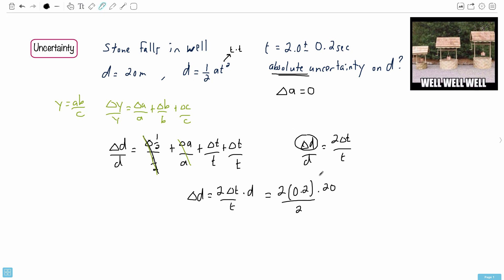If you look at this, you can do a couple things. 2 divided by 2 cancels out. You have 0.2 times 20. What's that going to be? 0.2 times 20, that's 4. So we're going to have 4 meters. That's why the answer was D - that was plus or minus 4 meters.